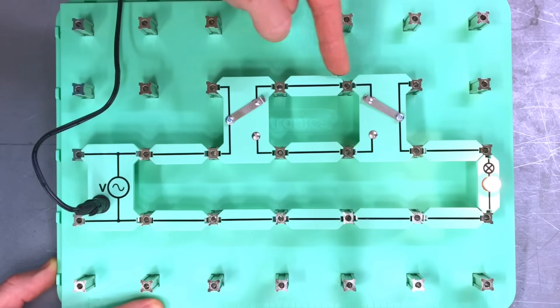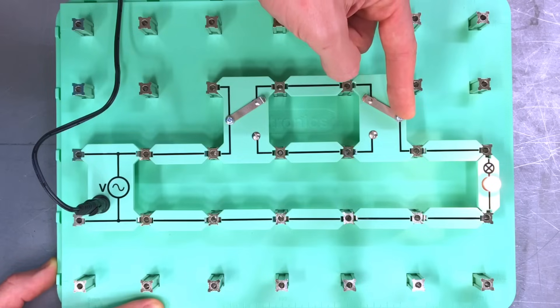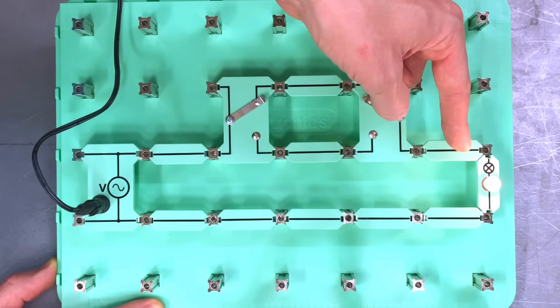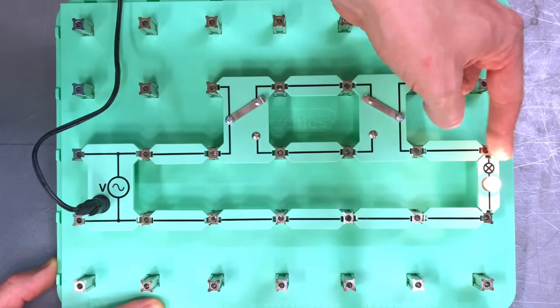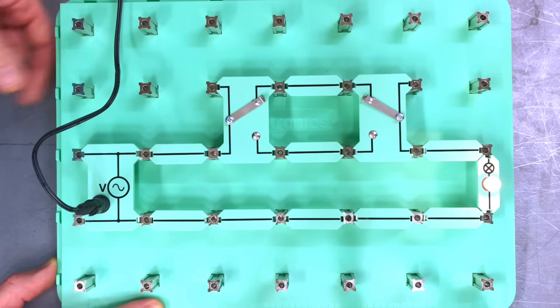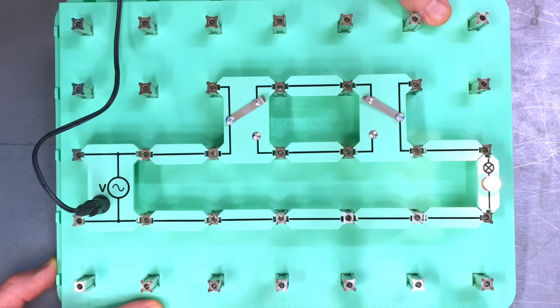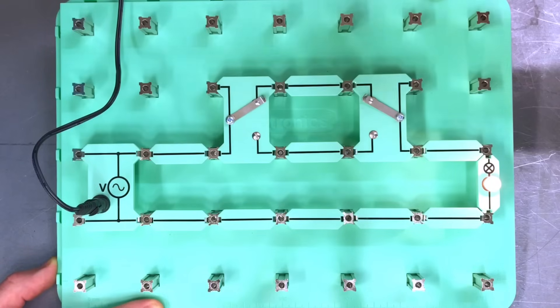The current can continue down here onto this switch, passes through that contact onto the common terminal which then connects the switched line conductor and operates the lamp and turns it on. Now if we look at what happens when we operate the other switch, what's going to happen?